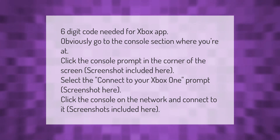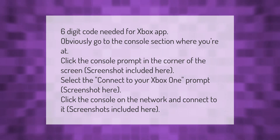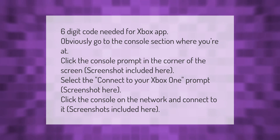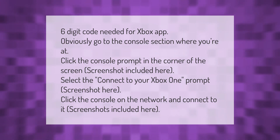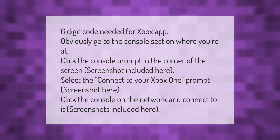A six digit code is needed for the Xbox app. Go to the console section and click the console prompt in the corner of the screen — screenshot included. Select the 'Connect to your Xbox One' prompt, then click the console on the network and connect to it. Screenshots are included throughout.